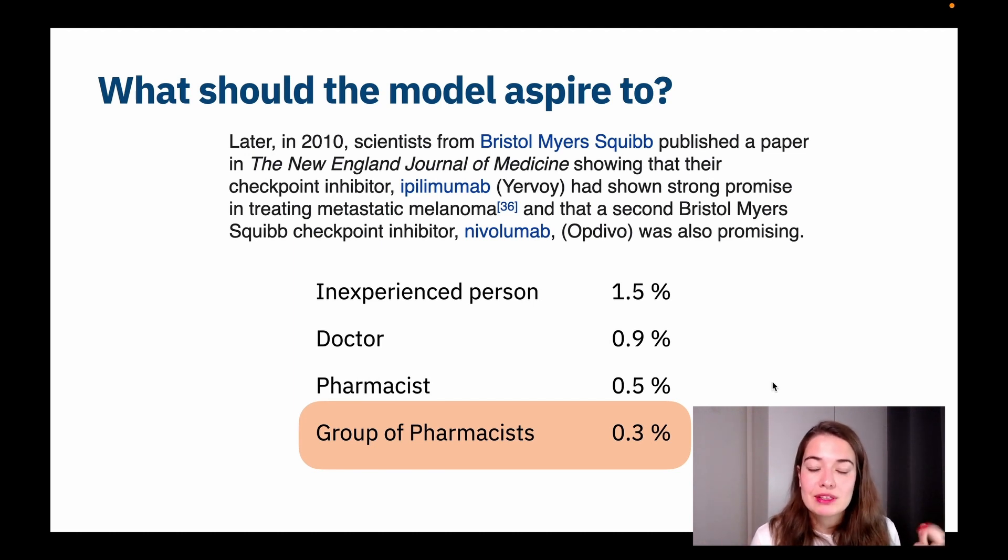All we have is this table and these numbers. Then what we can take is the best number possible. A group of pharmacists were able to achieve 0.3% error only. So that means that is a possibility. It could be higher or lower than that. It could be zero, 0.1, 0.2. We don't know that. As far as we know, Bayes optimal error is 0.3.